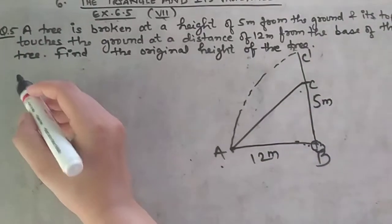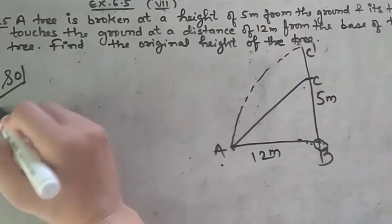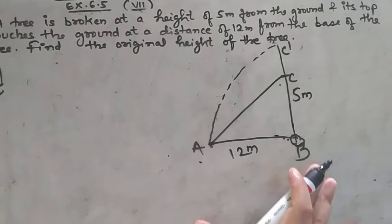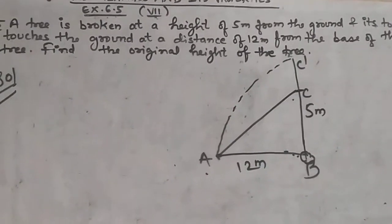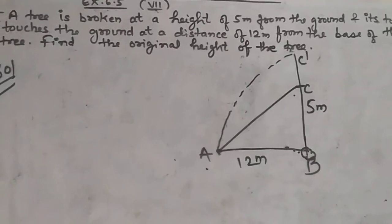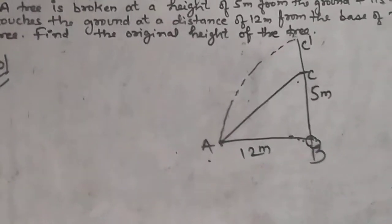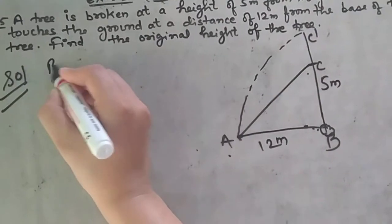Now we have to find the original height. For that, we can see that this forms a right angle triangle, and here we can use the Pythagoras property.